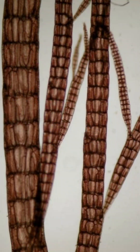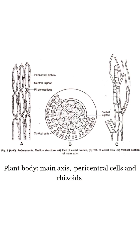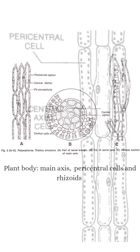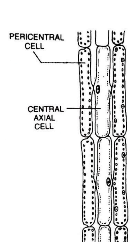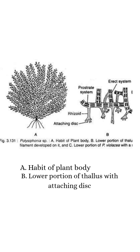The body of Polysiphonia has a main axis, pericentral cells, and rhizoids. The main axis is the backbone of the alga, made of central cells. Pericentral cells surround the main axis, giving it strength and support, and rhizoids are used for attachment.